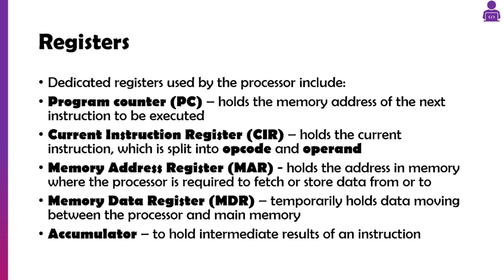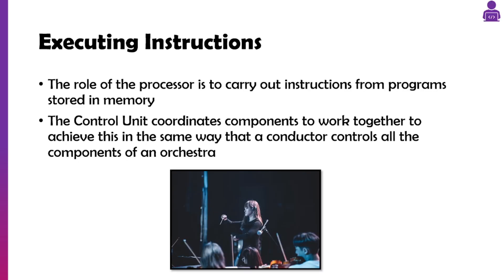The program counter holds the address of the next instruction — not the actual instruction itself. The current instruction register holds the instruction you're currently executing. The memory address register holds the address from which we're getting data. The memory data register temporarily holds data moving between the processor and RAM. The accumulator stores the result of an instruction once it's been executed.